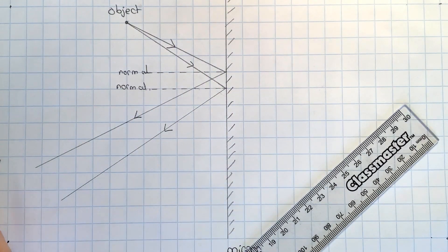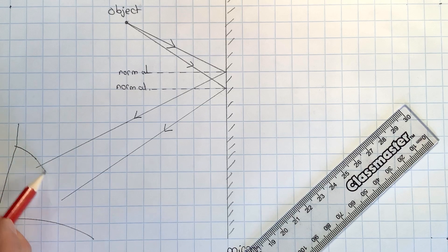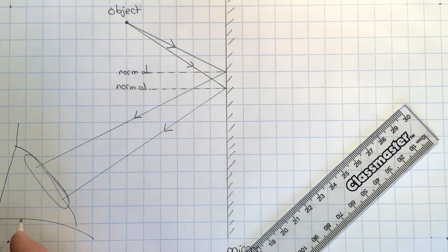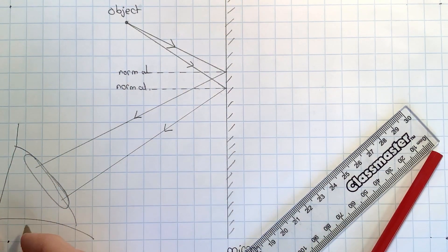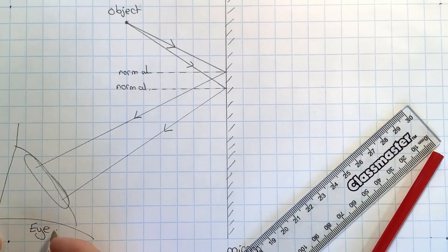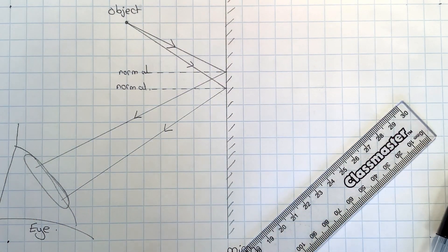Now these will be going into somebody's eye, so I can draw in a nice big eye with those going in and I'm going to label that eye to show that the light is going into someone's eye.